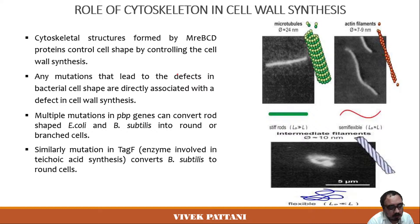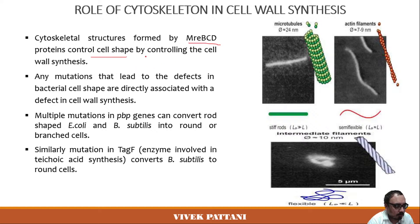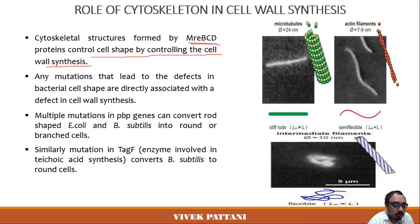Regarding the role of the cytoskeleton in cell wall synthesis: cytoskeletal structures formed by MreBCD proteins control cell shape by controlling cell wall synthesis. These MreBCD proteins help control the shape of the cell. Mutations leading to defects in bacterial cell shape are directly associated with defects in cell wall synthesis.